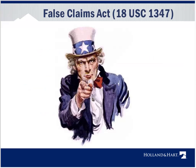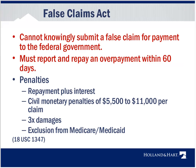The False Claims Act is the government's big gun when it comes to addressing fraud and abuse in federal healthcare programs. It says you cannot knowingly submit a false claim for payment to the federal government. In the wake of the Affordable Care Act, if you have submitted a false claim, you have an affirmative obligation to report and repay an overpayment within 60 days, or at the time the cost report is due. If you fail to do that, it turns into a false claim.